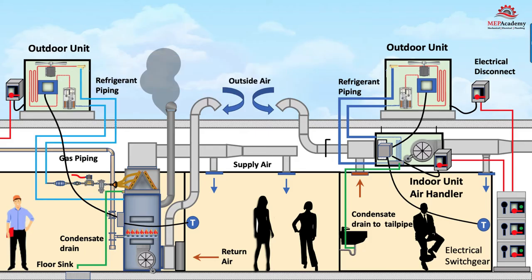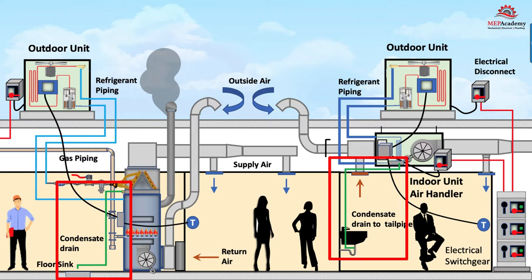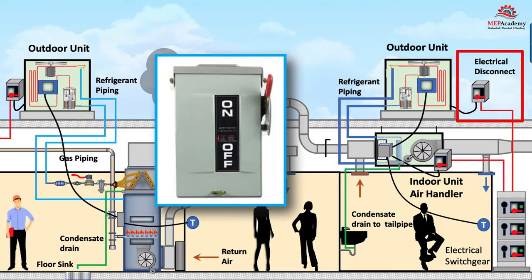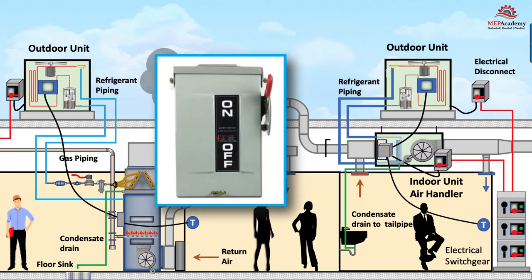You'll need to install a condensate drain pipe from the cooling coil drain pan to an approved receptor like a floor sink or the tailpipe of a sink. Electrical will need to be installed from a breaker panel to a disconnect switch located near the equipment. The disconnect switch is a safety device that allows any technician working on the equipment to lock out the electrical power feeding the HVAC equipment.